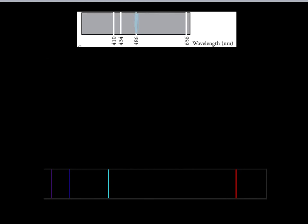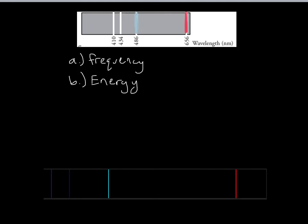If you're feeling comfortable with this, go ahead and stop the video and do the practice problems on the website. If you're still a little bit rusty, we'll go ahead and do one more practice problem together — we'll do the red light. We're going to find the frequency and then the energy. Go ahead, pause the video, give it a shot, and see if you can do it on your own. If you run into trouble or just want to check the answer, resume the video.